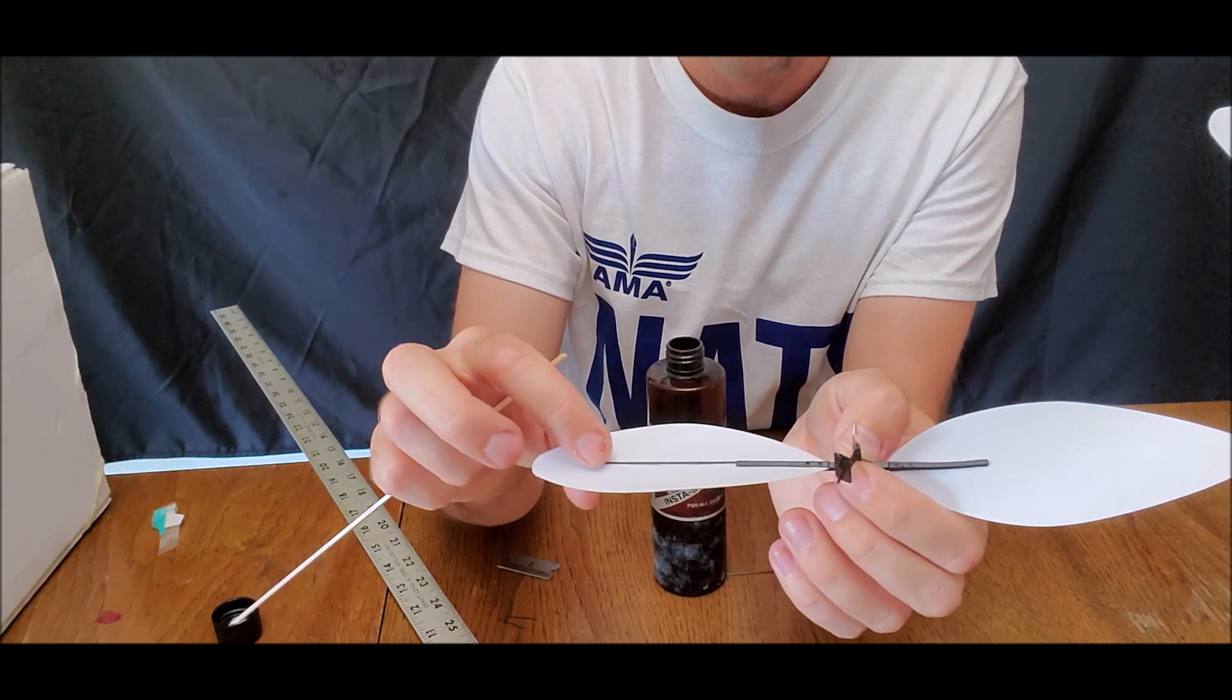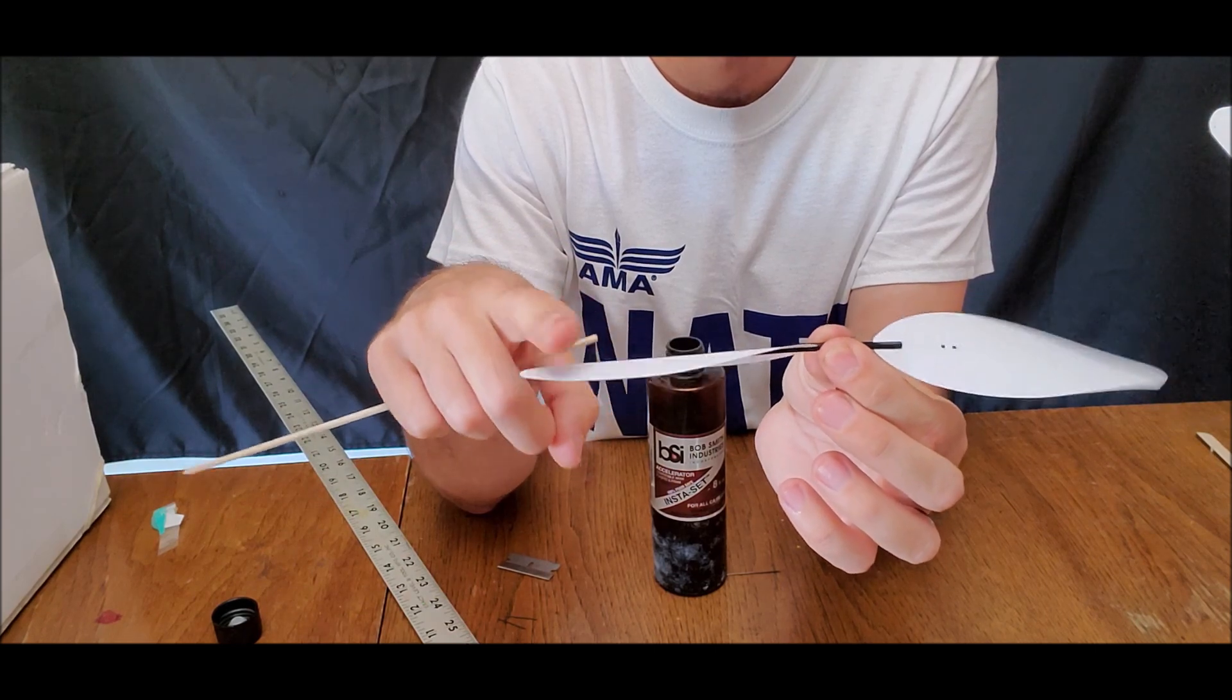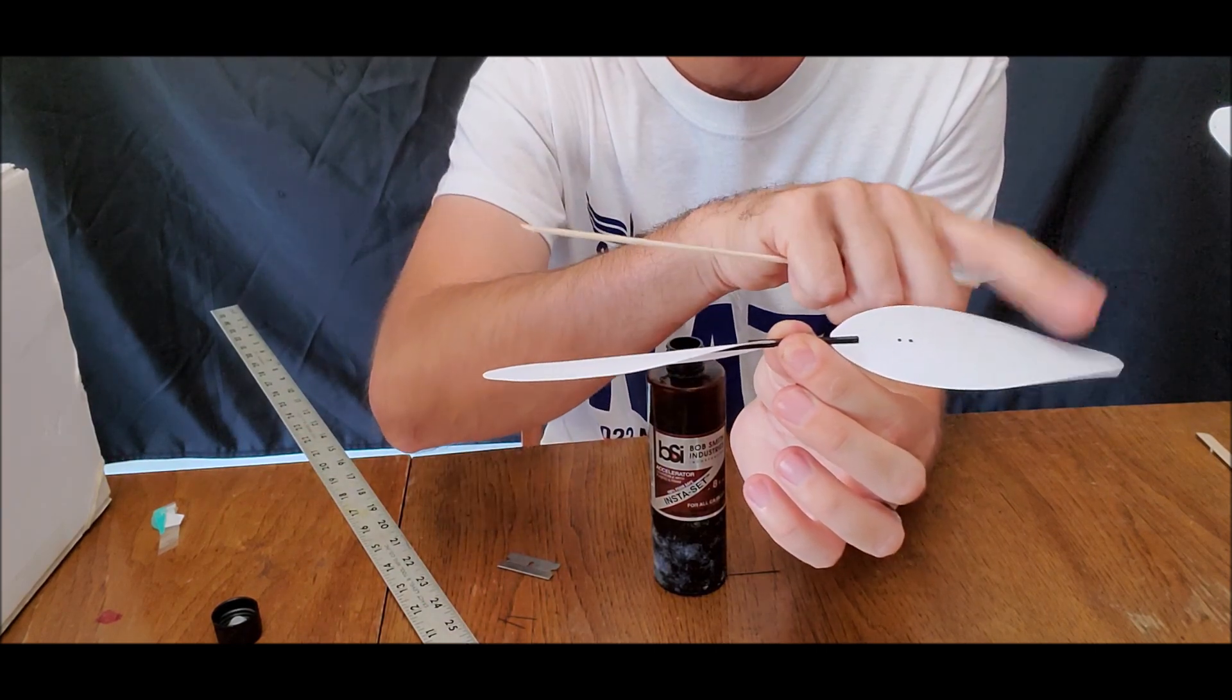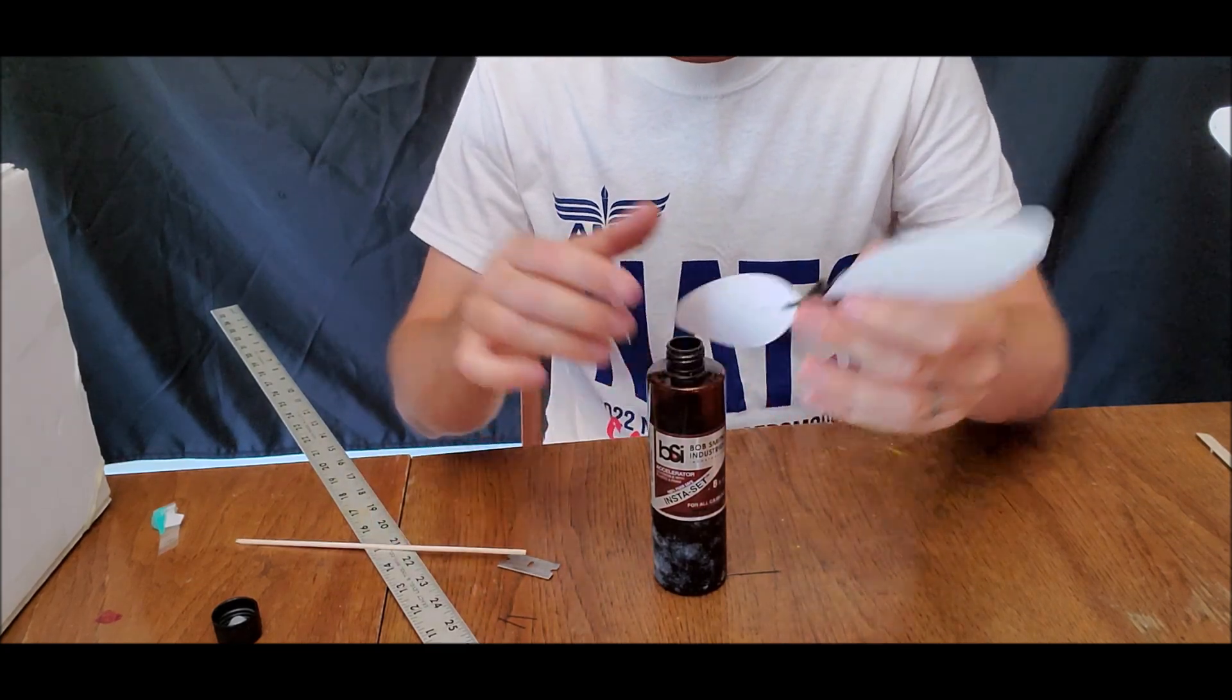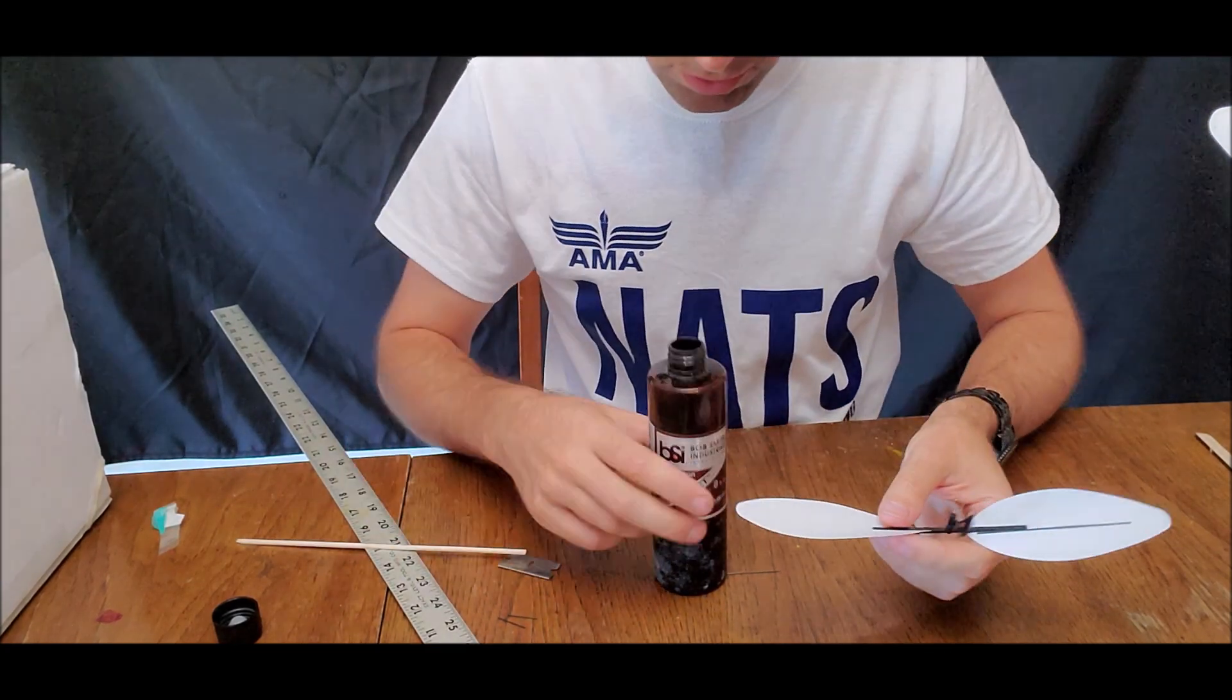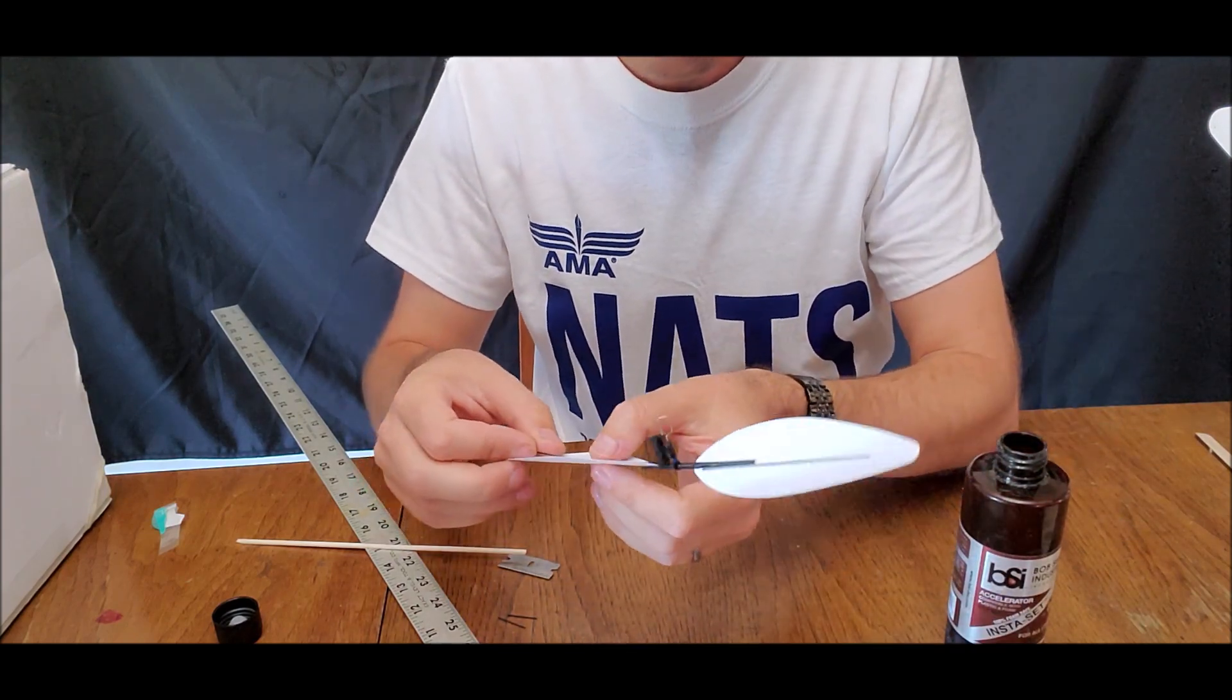And now we have a very stiffened up blade. So if you look at this you can see I can tap on this and it stays put whereas this one still flops a little bit. So we're going to go over to the other blade and we're going to repeat that same process.